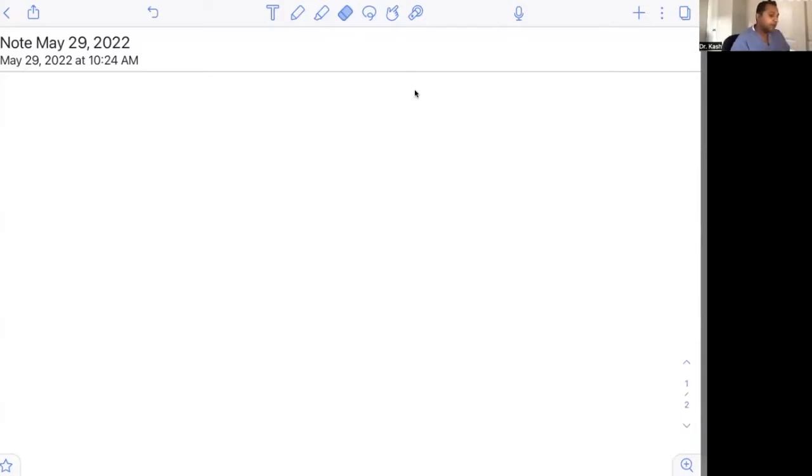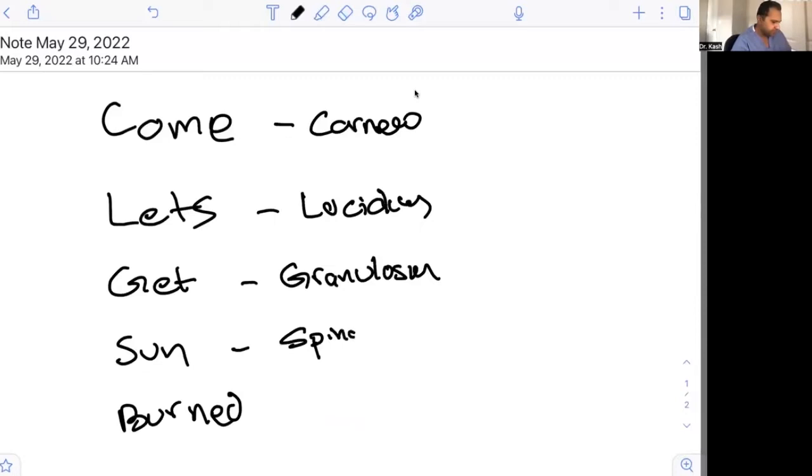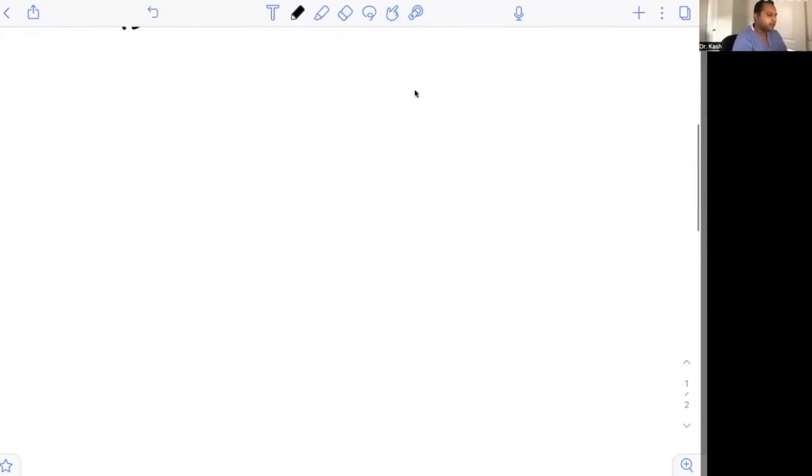The mnemonic that I like to use to memorize the layers initially is something called come, let's get sunburned, something you should be telling your clients not to get, but it's a funny way to remember it. C stands for corneum, which is the most superficial layer. L stands for lucidum. G stands for granulosum, S stands for spinosum, and B stands for basale. Let's talk about each of these layers, and we will start from the bottom up.